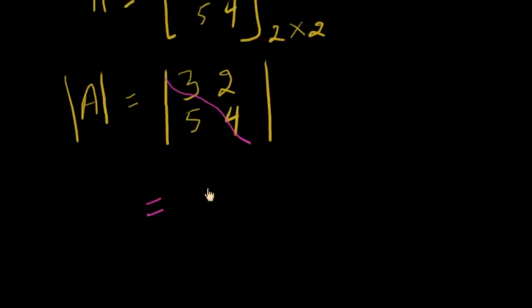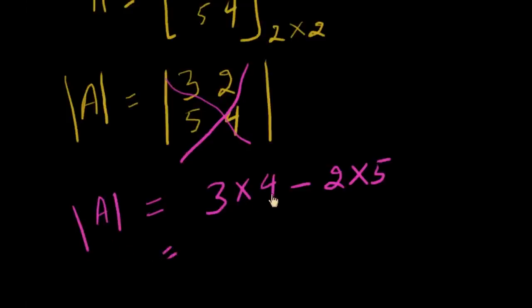And the answer will be 3 into 4 is 12 minus 5 into 2 is 10. 12 minus 10 is 2. So the determinant of the 2 by 2 matrix is 2.